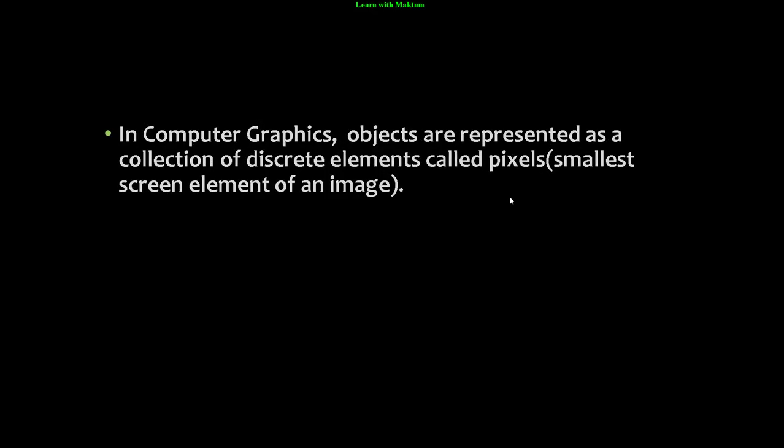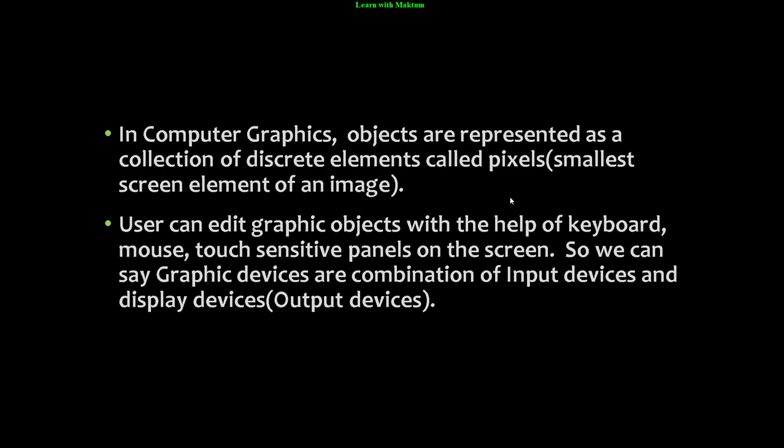Before starting that, let us discuss some points. In computer graphics, objects are presented as a collection of discrete elements called pixels. Pixel is the smallest screen element of an image. Users can edit graphic objects with the help of keyboard, mouse, or touch sensitive panels on the screen.